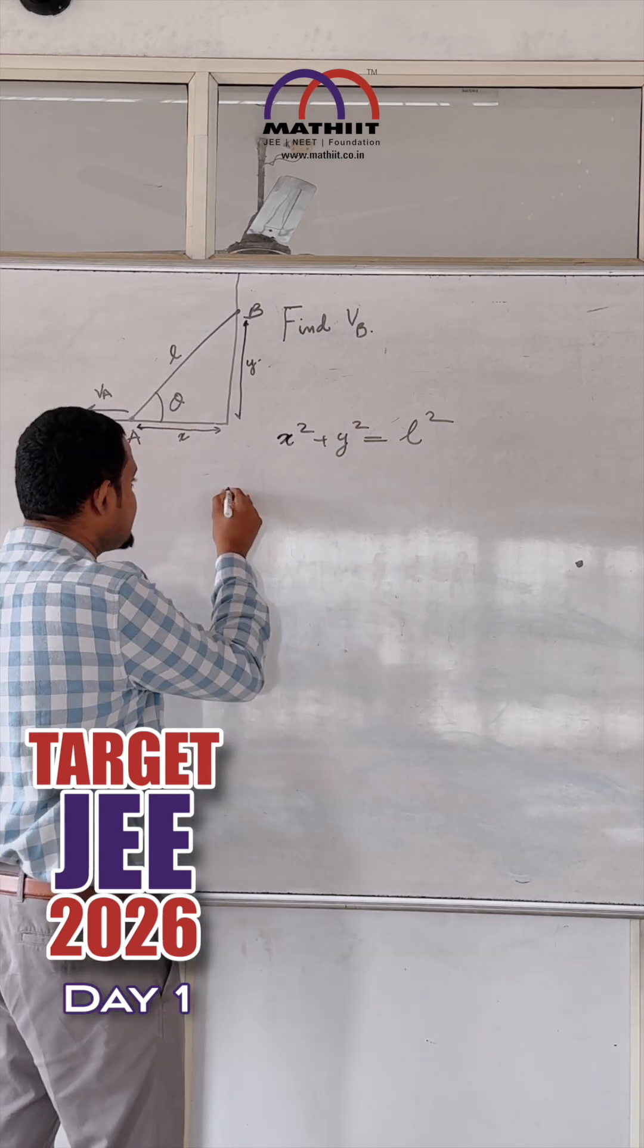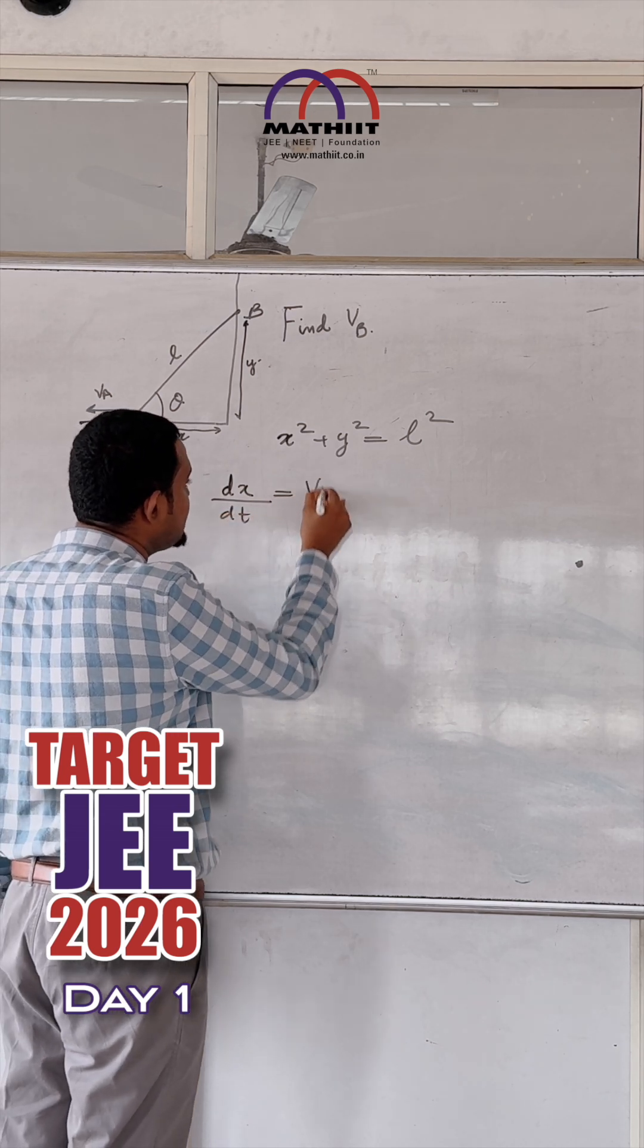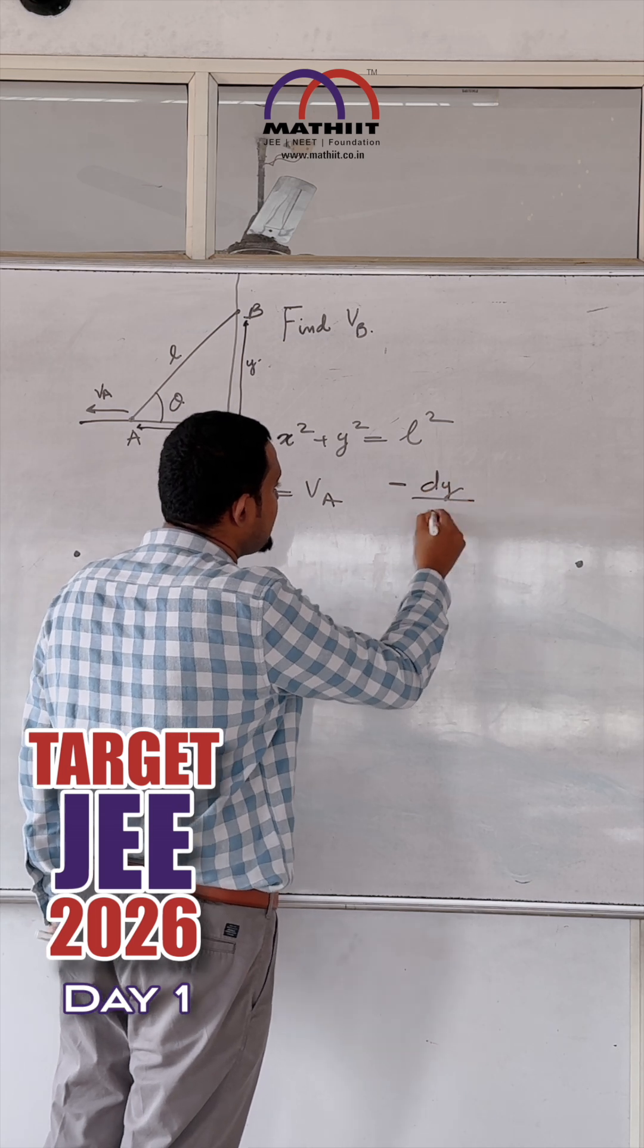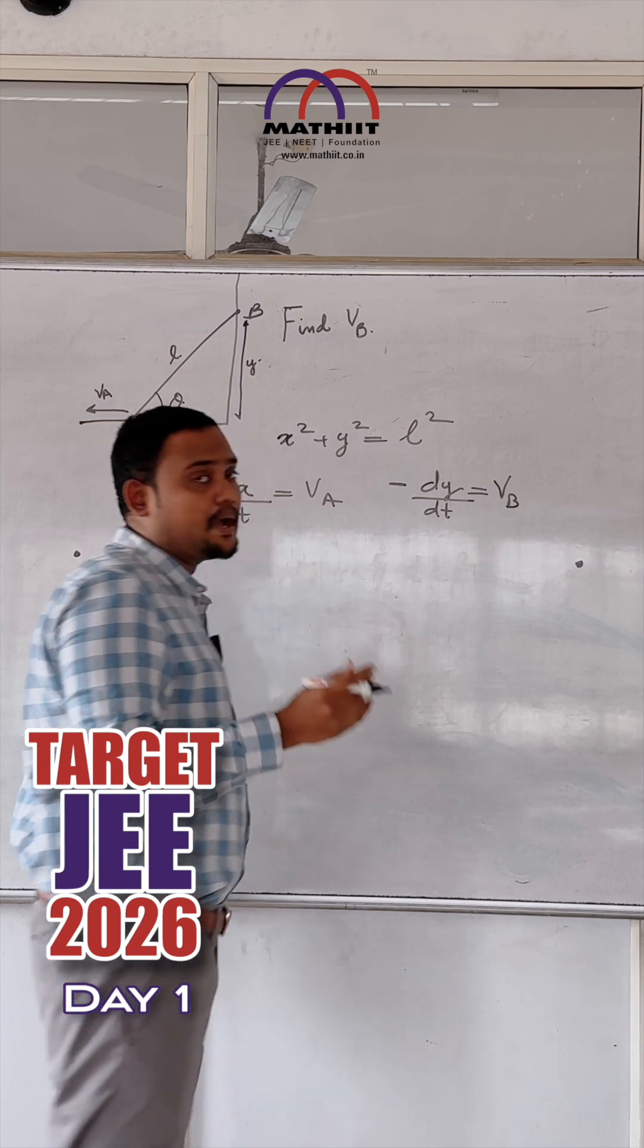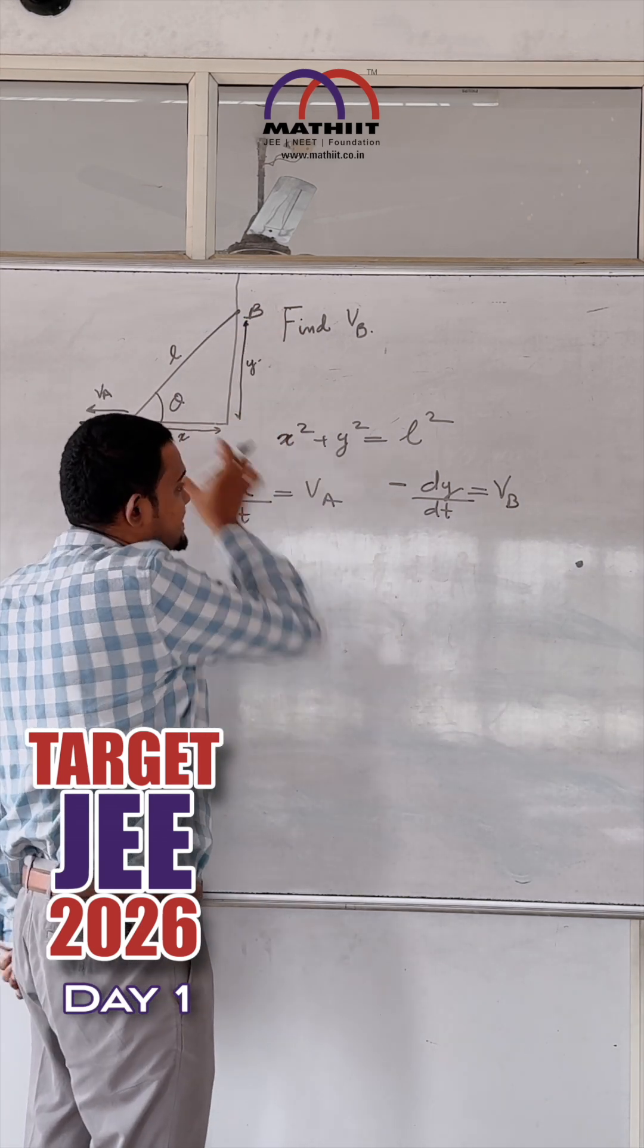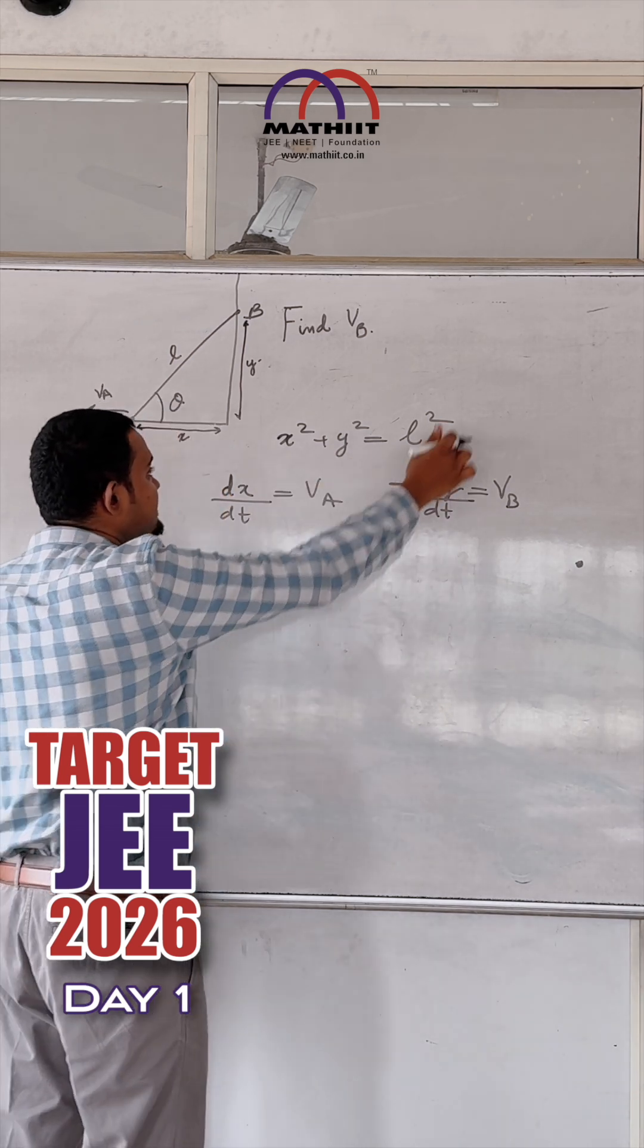Second equation is that DX by DT is going to be equal to VA and minus DY by DT is going to be equal to VB. The minus is because Y is decreasing and X is increasing. Minus simply shows that Y is decreasing. So we differentiate this equation now.